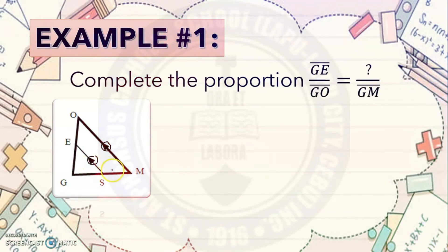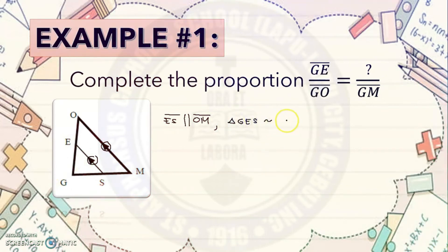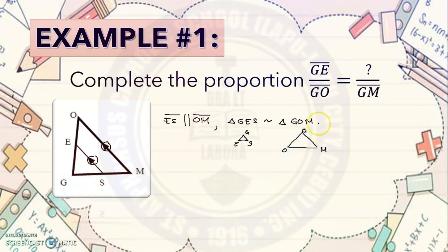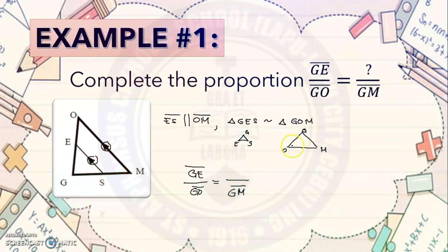According to the Basic Proportionality Theorem, since ES and OM are parallel, we can conclude that triangle GES is similar to triangle GOM. Drawing the two triangles: the smaller triangle GES and the larger triangle GOM. Given the proportionality GE over GO equals blank over GM, the corresponding side of GM on the smaller triangle is GS. So the answer is GS.